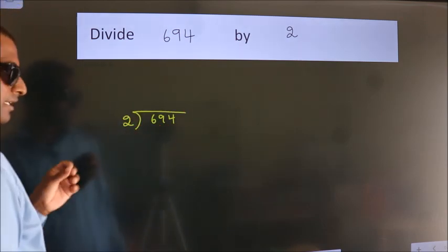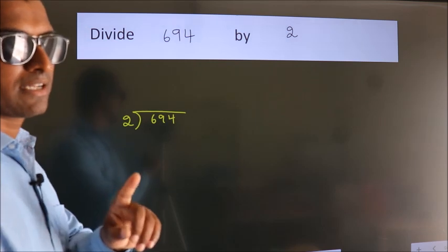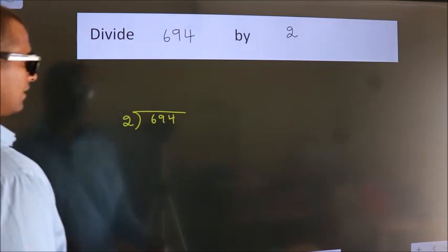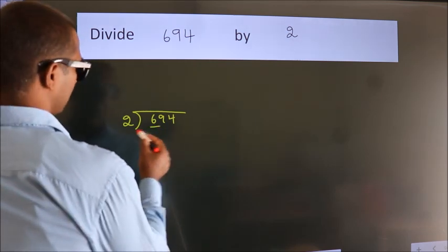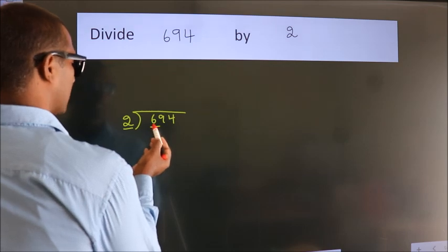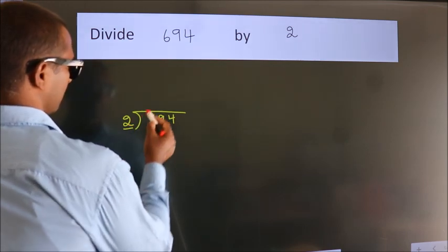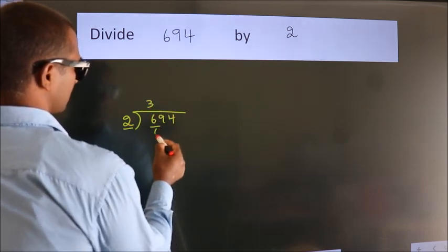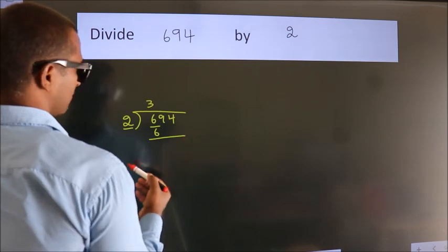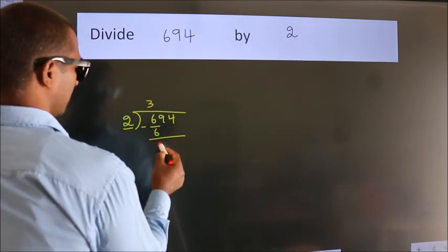This is your step 1. Next, here we have 6, here 2. When do we get 6? In 2 table, 2 times 3 is 6. Now we should subtract. We get 0.